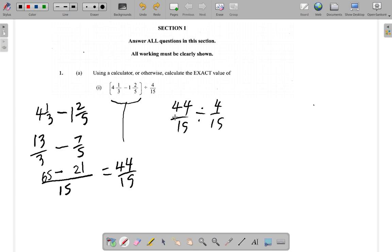Remember when you have a fraction divided by another fraction, this fraction would be the numerator, 44/15. You multiply by what you have here as the denominator fraction, but you're going to find the reciprocal.